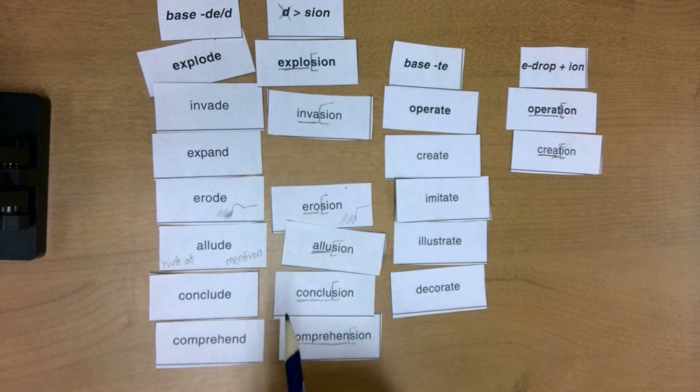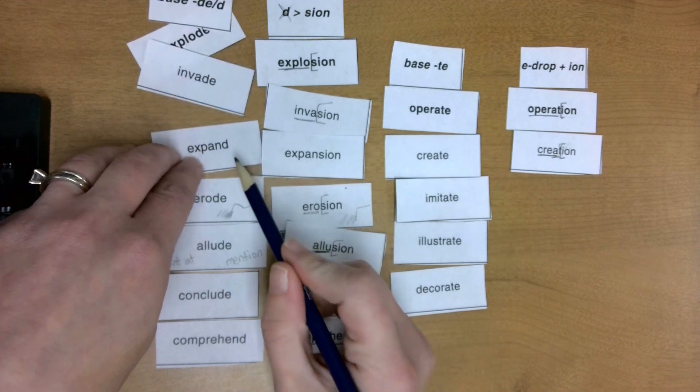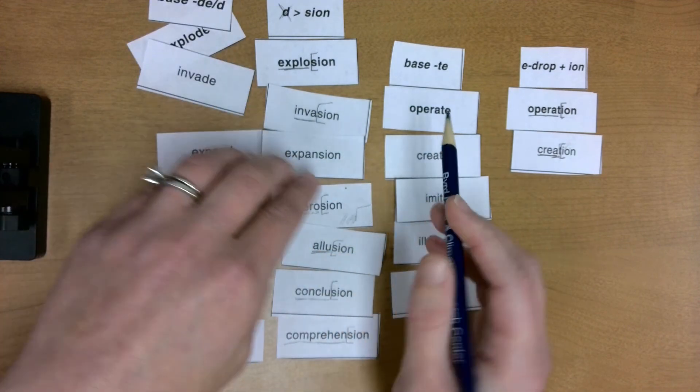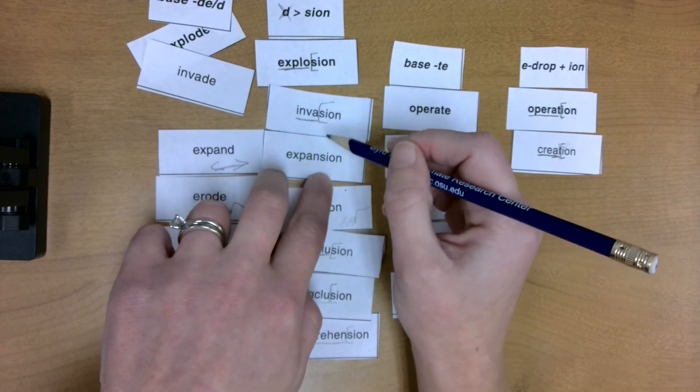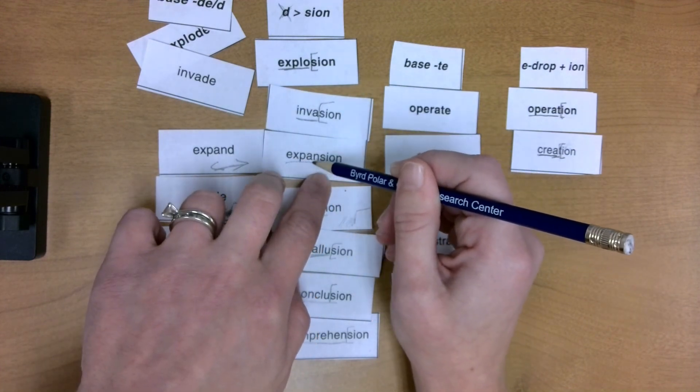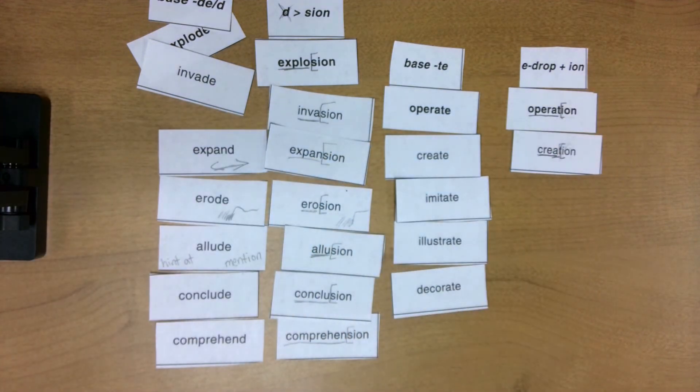And then expand to expansion. Expand means to make something wider, right? And so the state of expanding is expansion. Expansion was great. Take a look here. Underline my base word. Notice that that D changed to an S-I-O-N.